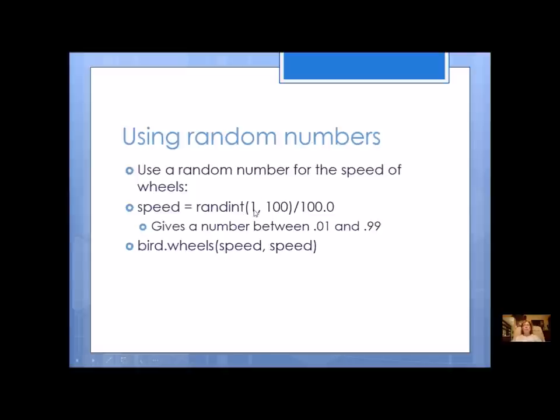Here I've chosen a number between 1 and 100. Then if I divide it by 100 I'm going to get a decimal. Remember to divide by a decimal number, so 100.0 and not just 100. So I would get a number between 0.01 and 0.99, which could be an excellent speed. And then I can use this variable in my wheels or as an argument for my wheels method. That's one example.